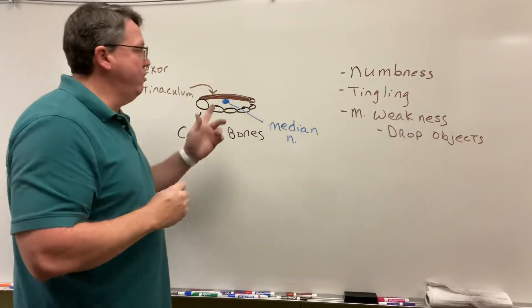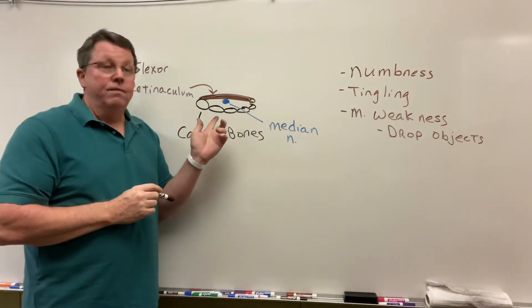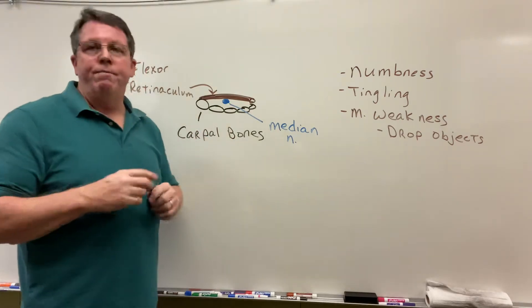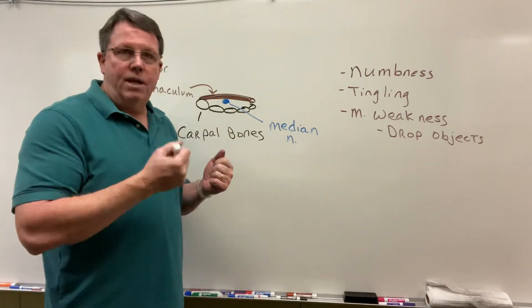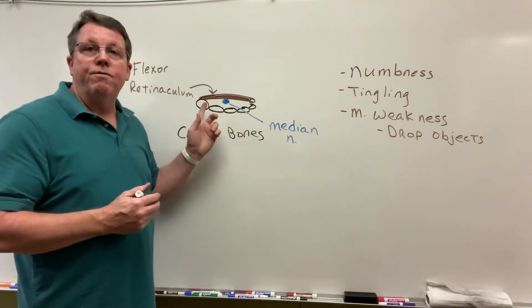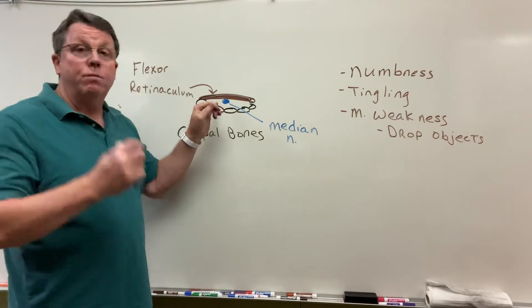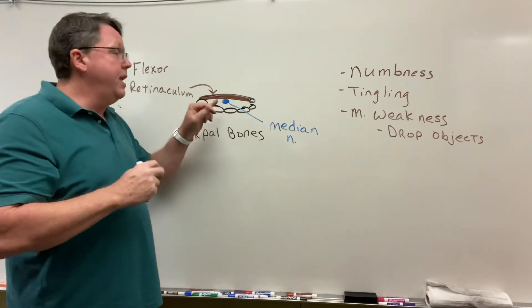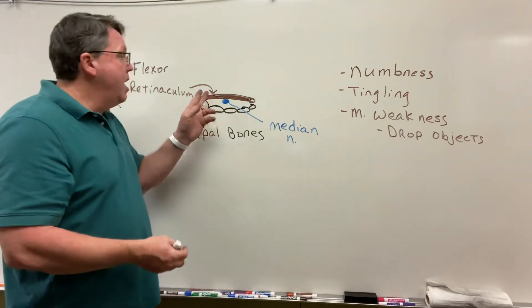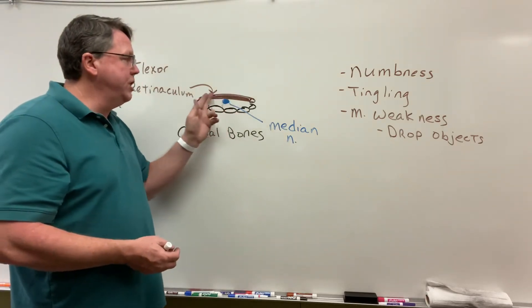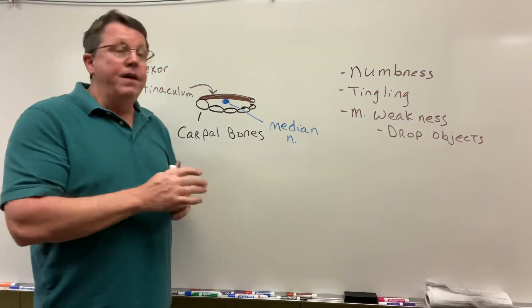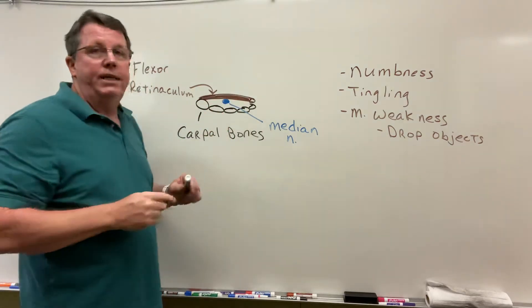The first thing you can do is put a brace on. If you're working out and lifting weights, your muscles get bigger. If you're using this a lot, the flexor retinaculum gets bigger and puts pressure on the nerve. But if you stop working out, your muscles get smaller. If we can limit the amount of motion that this flexor retinaculum is doing, it will decrease in size and take pressure off the median nerve.